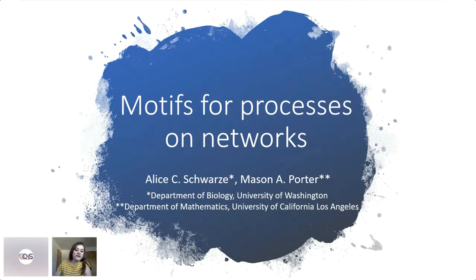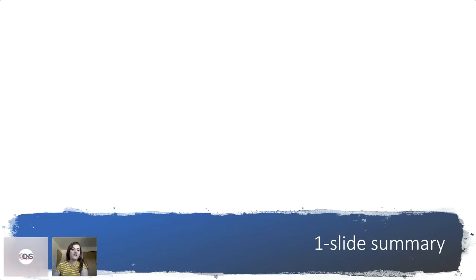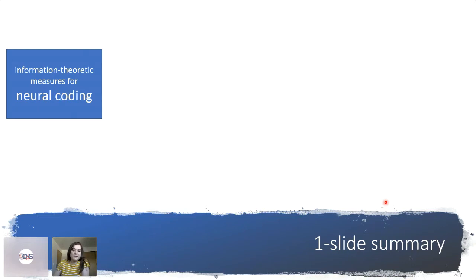I'll start with a one-slide summary to help you decide whether to tune in or zone out for the next 25 minutes. I'll have the titles of the slides at the bottom so my face doesn't cover important information. This is my first time at this workshop, but judging from previous years, a common theme is an interest in information-theoretic measures that can help in understanding neural coding.